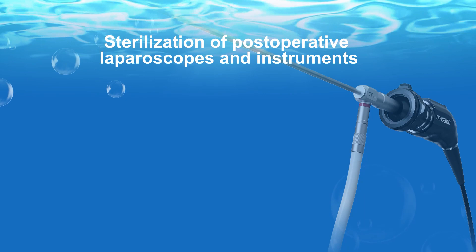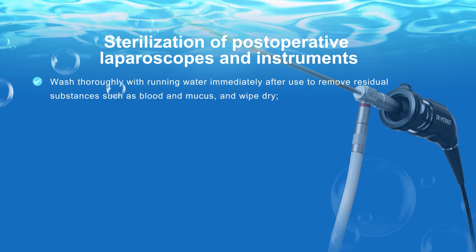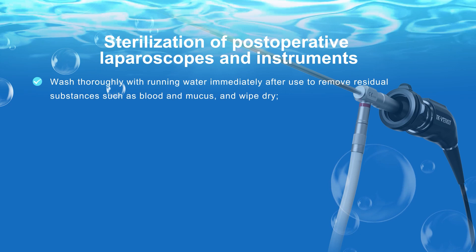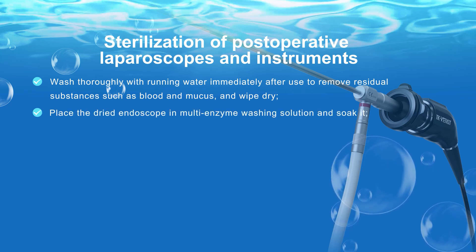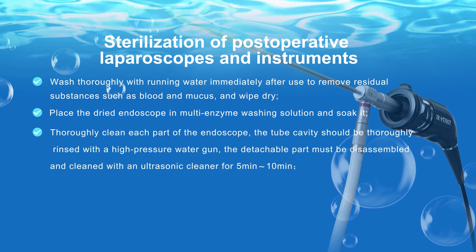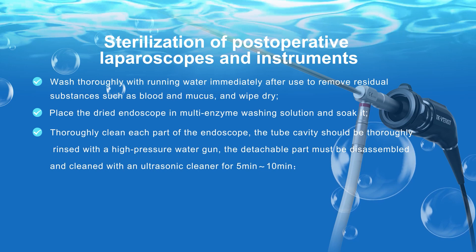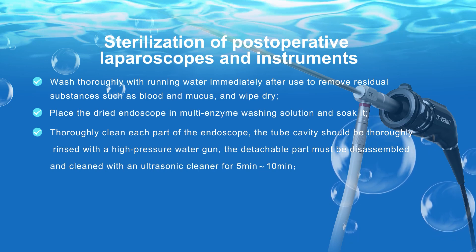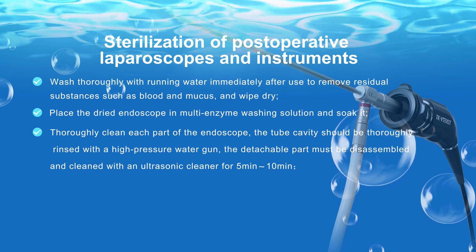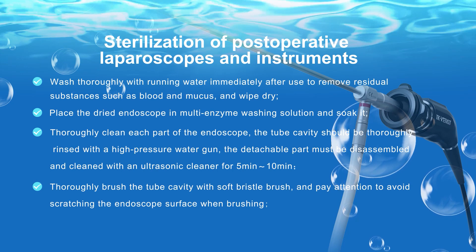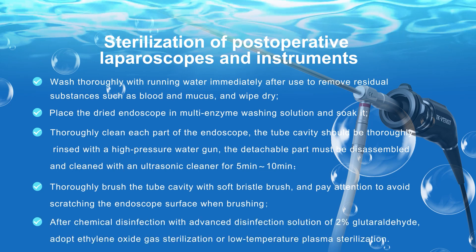Sterilization of post-operative laparoscopes and instruments. Wash thoroughly with running water immediately after use to remove residual substances such as blood and mucus, then wipe dry. Place the dried endoscope in multi-enzyme washing solution to soak, and thoroughly clean each part. The tube cavity should be thoroughly rinsed with a high-pressure water gun. Detachable parts must be disassembled and cleaned with an ultrasonic cleaner for 5–10 minutes. Thoroughly brush the tube cavity with a soft bristle brush, taking care to avoid scratching the endoscope surface. After chemical disinfection with 2% glutaraldehyde advanced disinfection solution, adopt ethylene oxide gas sterilization or low-temperature plasma sterilization.